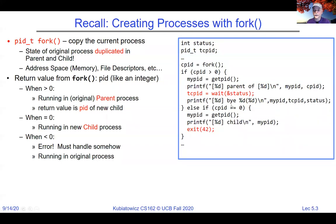Once we've forked, the parent has PID greater than zero and it executes a wait, which says it's going to pause or go to sleep until the child exits. The child exits with 42, which in this case is an error. Most cases with Unix, a return code of zero is what happens when there are no errors.